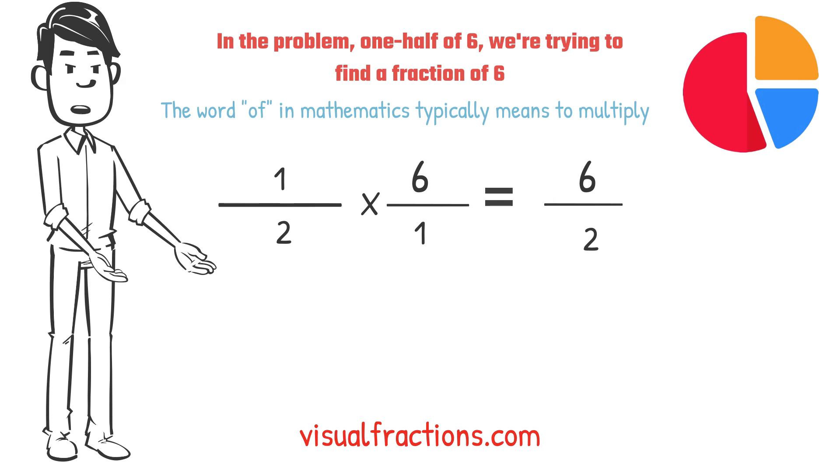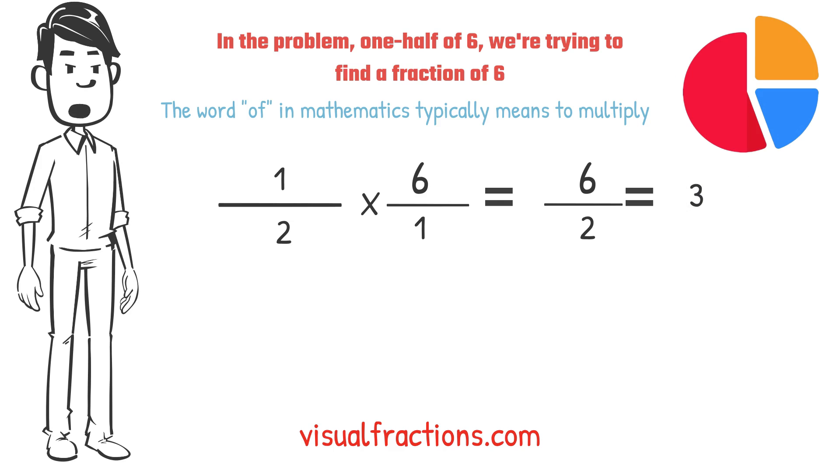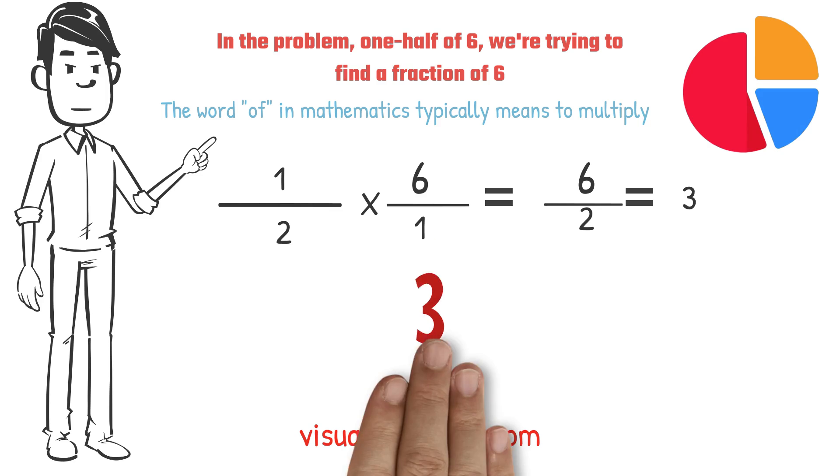To find the final answer, divide the numerator by the denominator. So, six divided by two equals three. And there you have it. One half of six is three.